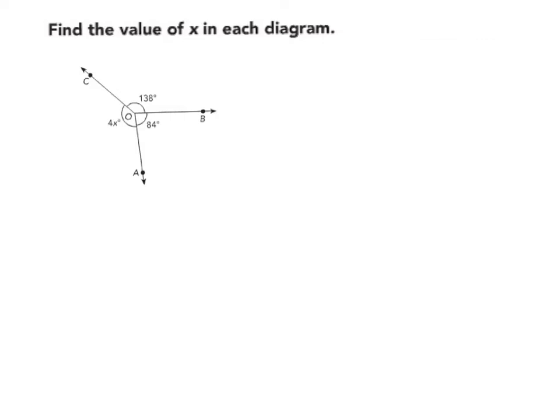Find the value of x in each diagram. The first thing to do is to look and make sure that all of the angles share a common vertex. So here we can see that all three angles intersect right here and share a common vertex at point O.